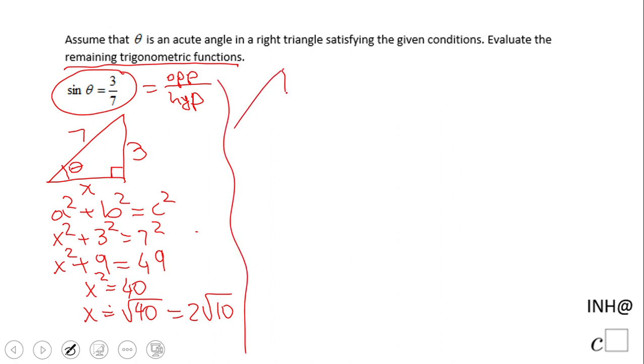Now I can redraw the triangle with all the information: 3, 7, theta, and 2 square root of 10. Let's find cosine. Cosine is adjacent over hypotenuse, so we get 2 square root of 10 over 7.